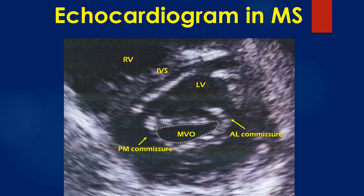An echocardiogram in mitral stenosis showing commissural fusion. The parasternal short axis view shows the mitral valve in cross section with the anterolateral and posteromedial commissures. The valve leaflets are thickened and the commissures are fused. The cut is slightly oblique, as a good cut should appear circular. It is often difficult to get a good circular outline of the mitral valve due to varying anatomical features of the chambers and cardiac position.